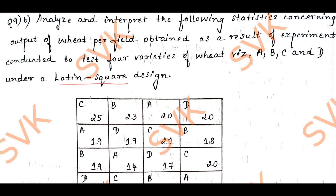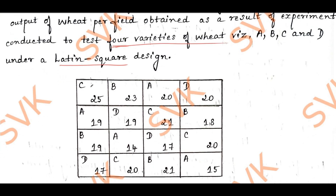This question has been asked in your model question paper. The question is as follows: analyze and interpret the statistics concerning output of heat per field obtained as a result of an experiment conducted to test four varieties of wheat — A, B, C, and D — under a Latin square design. This is the tabulation provided, showing observations per plant according to wheat varieties A, B, C, D. Using this data we need to solve the problem.